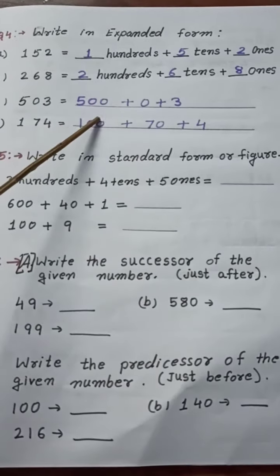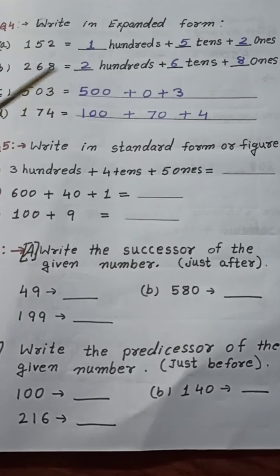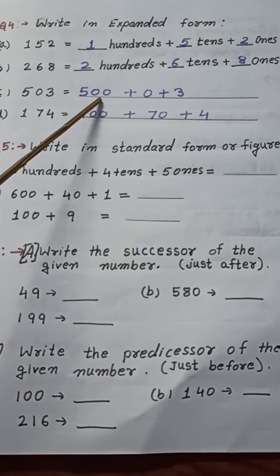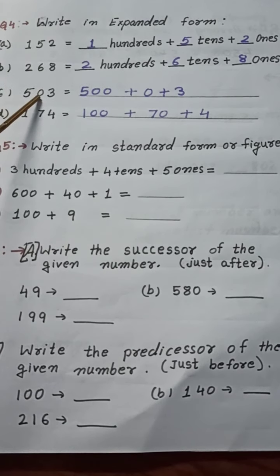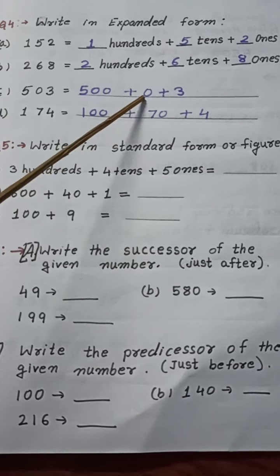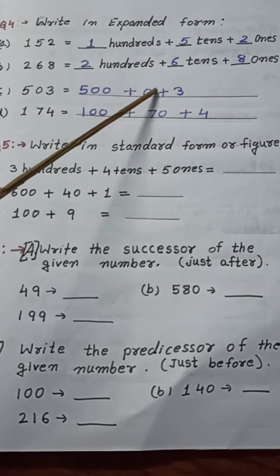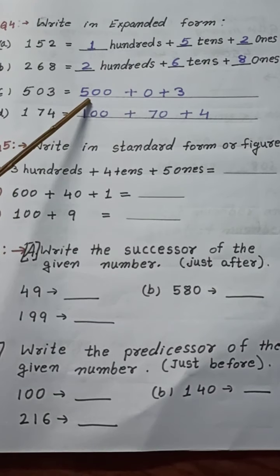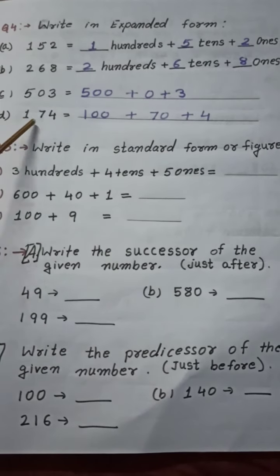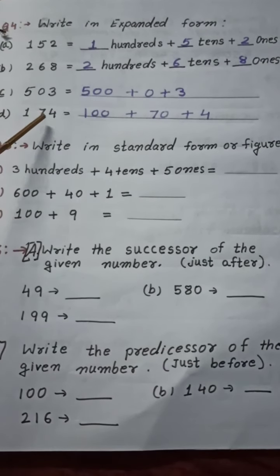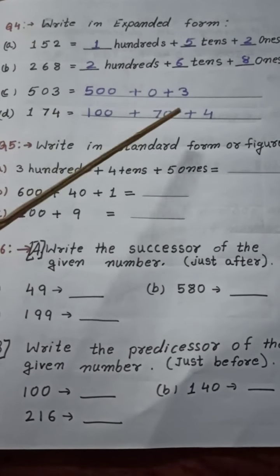This way also it will be asked, so children please don't be confused — both forms are the same. Here is 503 — how can we expand? 500. Here is 0, so I have written 0. No need to write 0 tens and 3 ones — if you don't write 0, your answer will still be correct. Question D: 1 is standing on the 100s place, so I have written 100. Then 7 tens is 70, and 4 ones is 4.